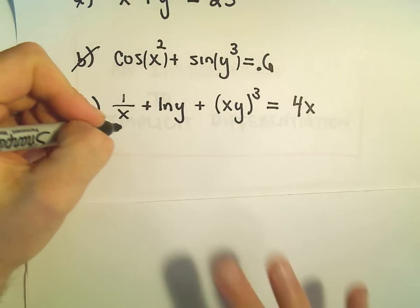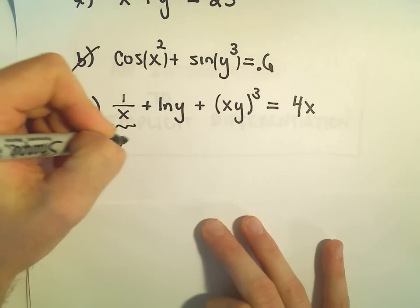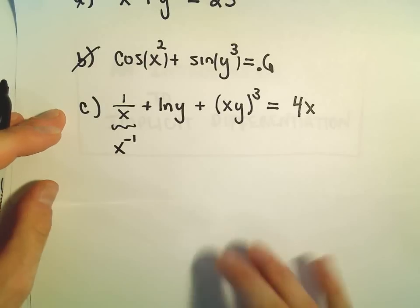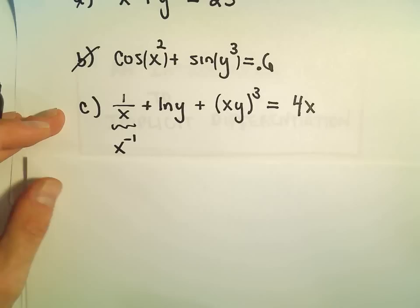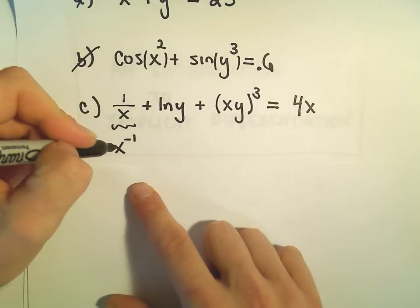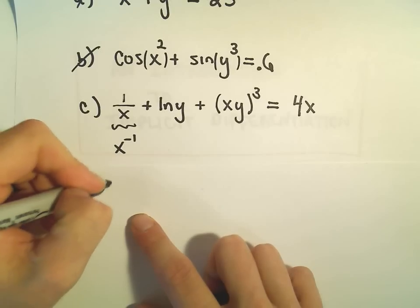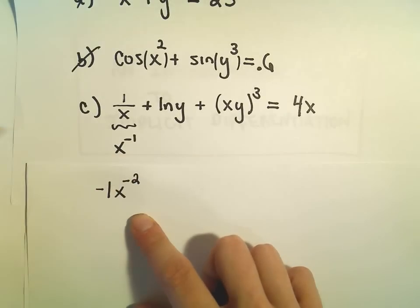Recall that we can rewrite 1 over x simply as x to the negative first. I don't want to rewrite the whole problem, just that part. When we take the derivative of 1 over x or equivalently x to the negative first, we'll get negative 1x to the negative second.